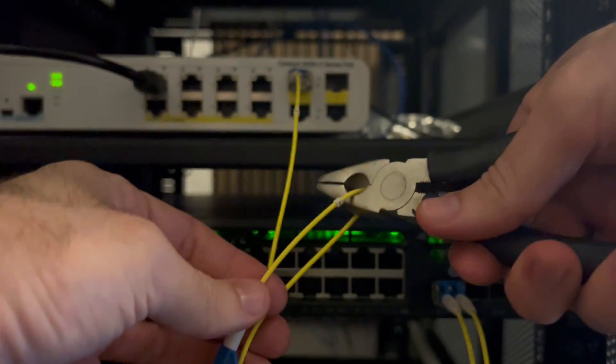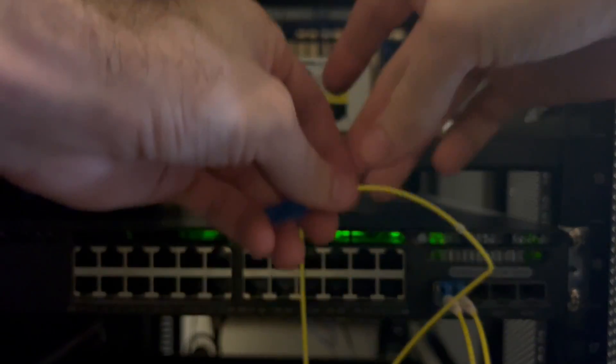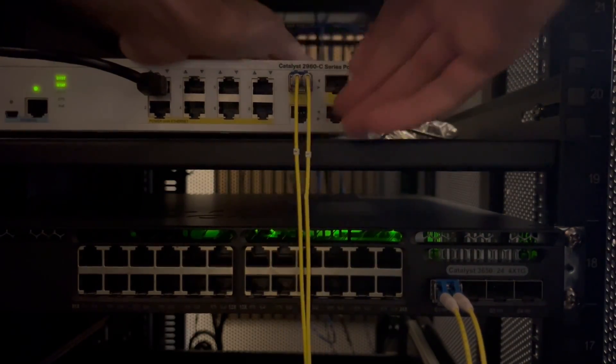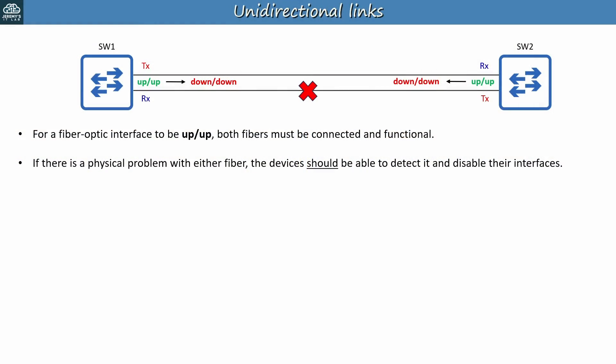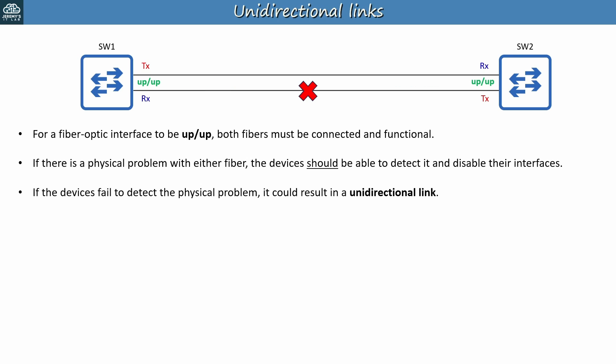With one fiber disconnected, the link lights are now off, and after damaging the fiber, even if you connect it, the link lights remain off. But not all physical problems preventing communication will be detected. If the devices fail to detect the physical problem, it could result in a unidirectional link — their interfaces will remain up-up. SW1 can transmit data to SW2, but data that SW2 transmits can't reach SW1. They both think the connection is up and running, but actually it only works one way.